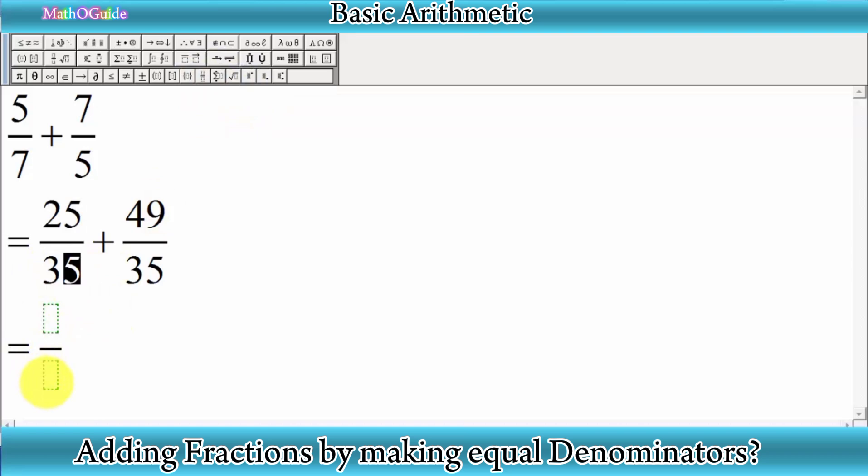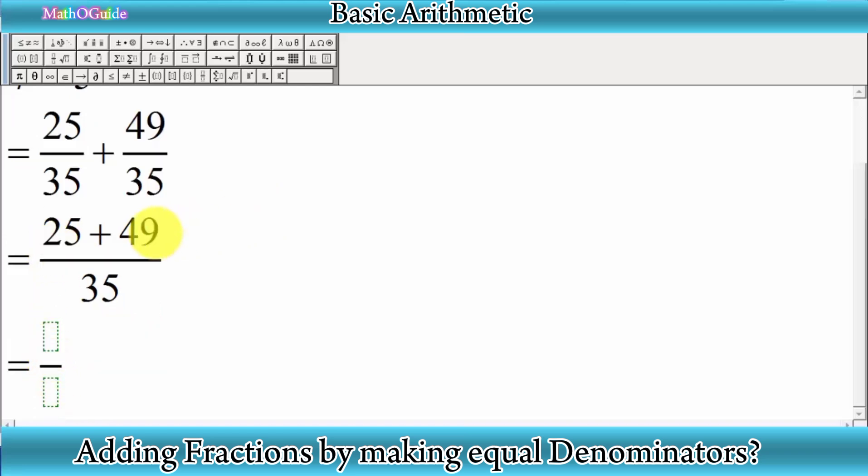Our answer is 25 plus 49, which equals 74, divided by 35. So this is our simplified answer. I hope you got the idea of how to add fractions by making their denominators equal.